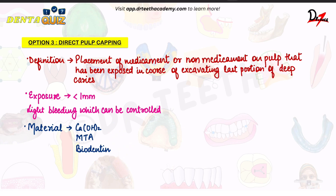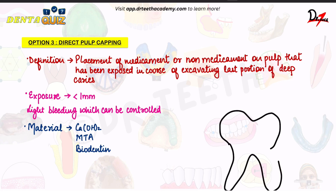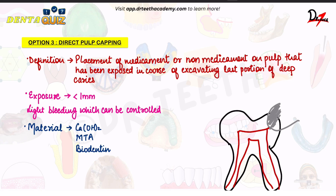Let us understand this with a diagram. Suppose this is a tooth and this is the pulp. Now we have deep caries here, but although the caries is deep it has not involved the pulp yet. When you go to excavate it, you remove the caries layer by layer.